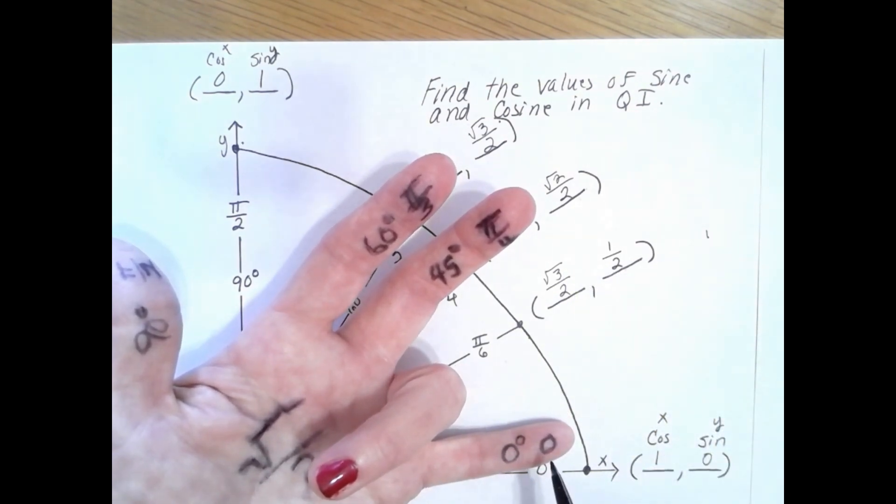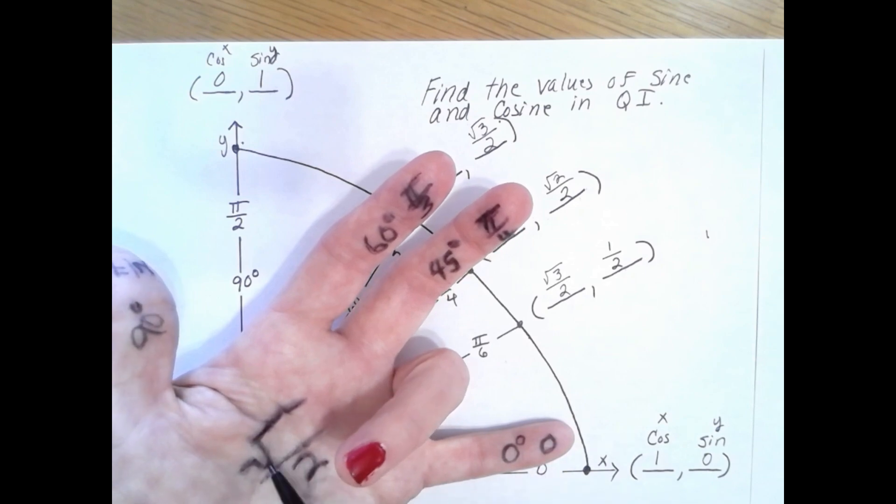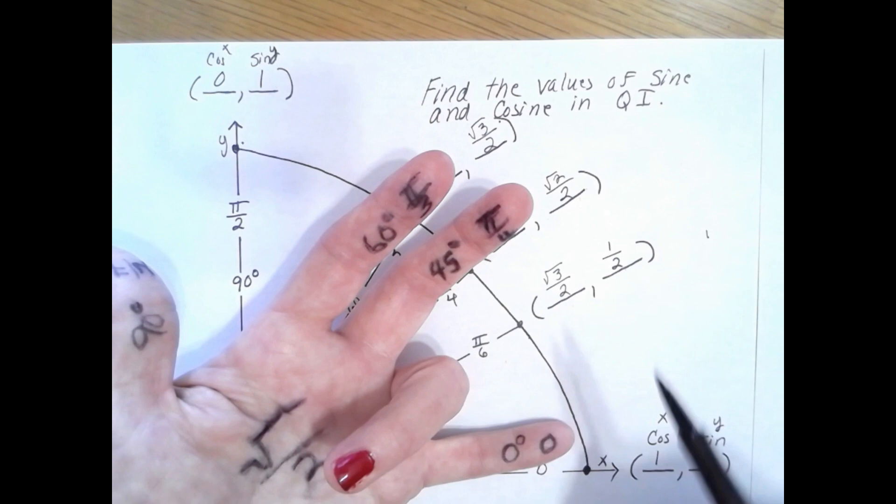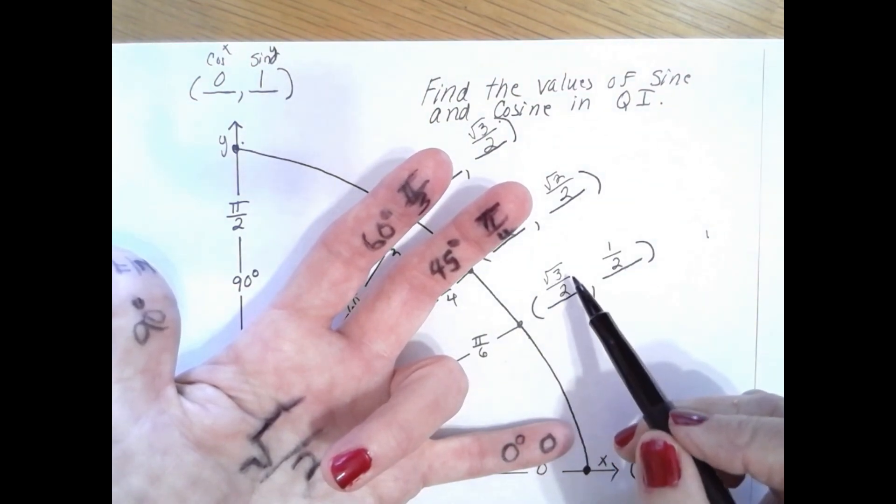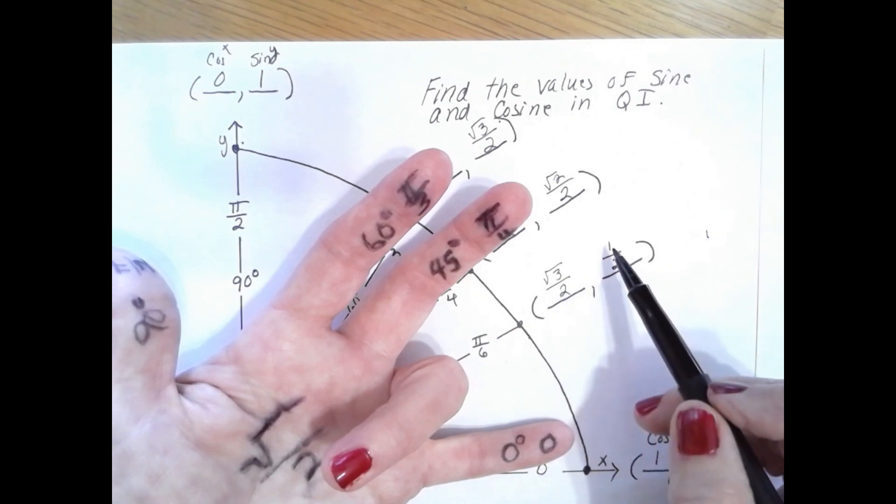On the right side I have one finger, so the square root of 1 which is 1 over 2 is sine. So at π over 6, my values are for cosine square root of 3 over 2, and for sine 1 half.